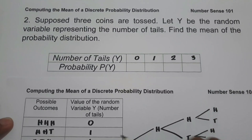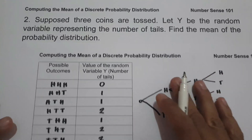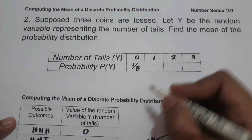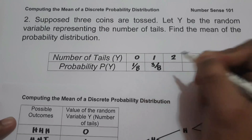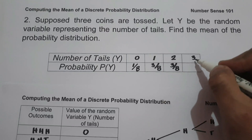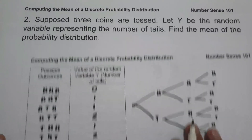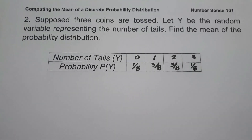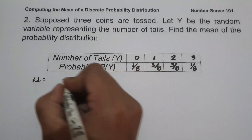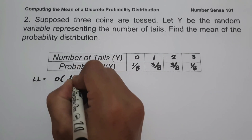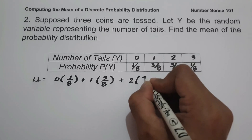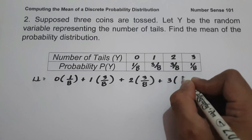The probability of getting 0 tails is 1 over 8. The probability of getting 1 tail is 3 over 8. The probability of getting 2 tails is 3 over 8. The probability of getting 3 tails is 1 over 8. To compute the mean: 0 × (1/8) + 1 × (3/8) + 2 × (3/8) + 3 × (1/8).